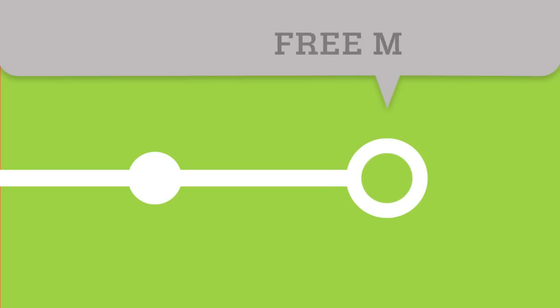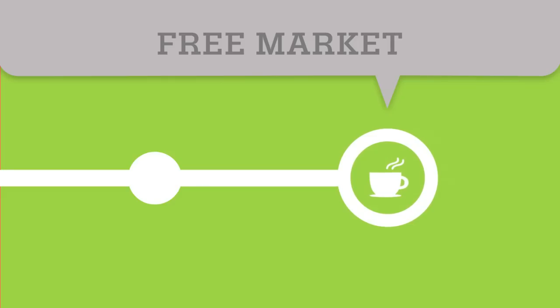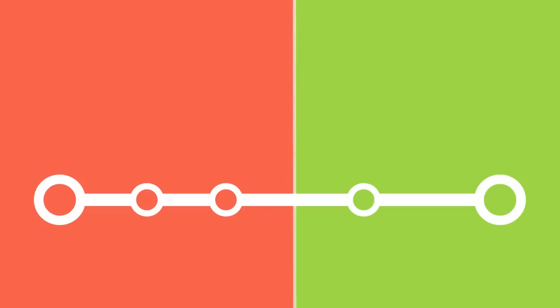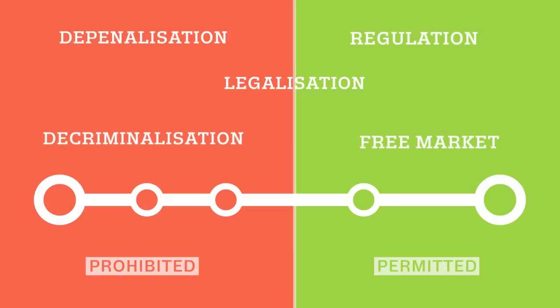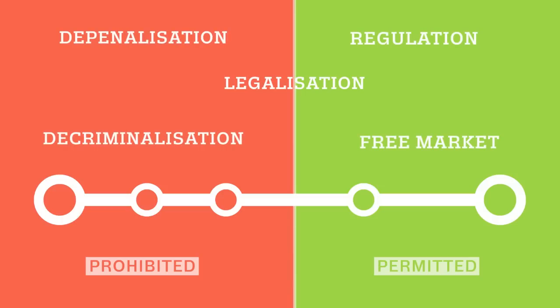If there are no specific rules on limits to supply, we're talking about a free market. This is, for example, the case for selling goods such as coffee, although general rules for consumer products will still apply. The important thing about an act of legalisation is that it crosses the line from prohibited to permitted behaviour, which depenalisation and decriminalisation do not do.